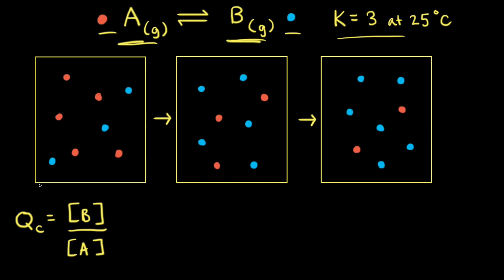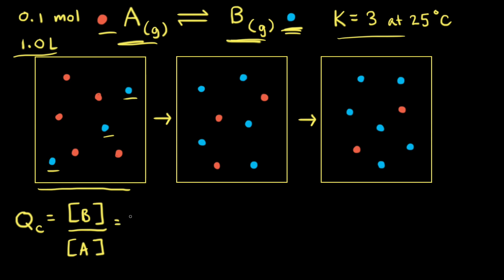Let's look at our first particulate diagram, where each particle represents 0.1 moles of a substance and the volume of the container is 1 liter. First, let's find the concentration of B. B are the blue spheres, so we count 3 blue spheres. 3 times 0.1 is 0.3 moles, divided by 1 liter gives a concentration of 0.3 molar. We can plug in 0.3 molar for the concentration of B.